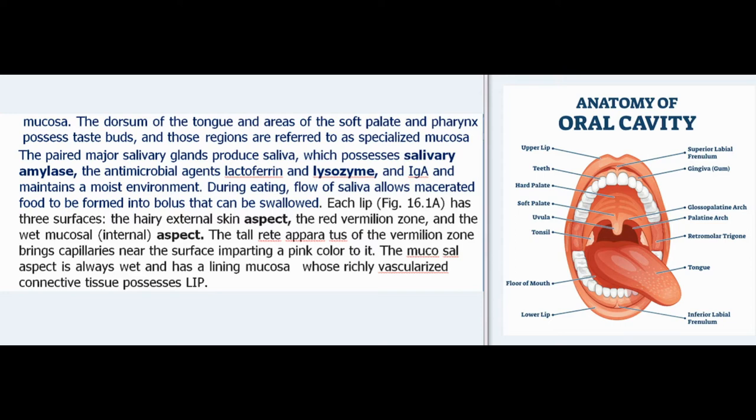Each lip has three surfaces: the hairy external skin aspect, the red vermilion zone, and the wet mucosal internal aspect. The tall rete apparatus of the vermilion zone brings capillaries near the surface, imparting a pink color to it.